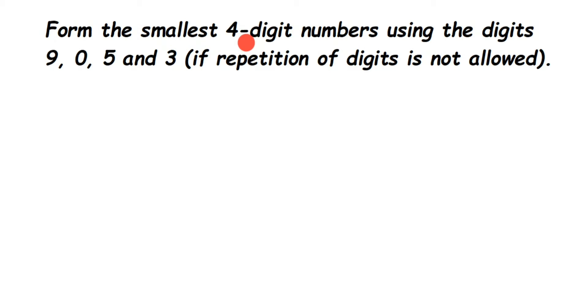They have given four different digits: 9, 0, 5, and 3. Now it's very simple. If you see this type of question and you have to form the smallest digit using the given digits, let's see what to do.